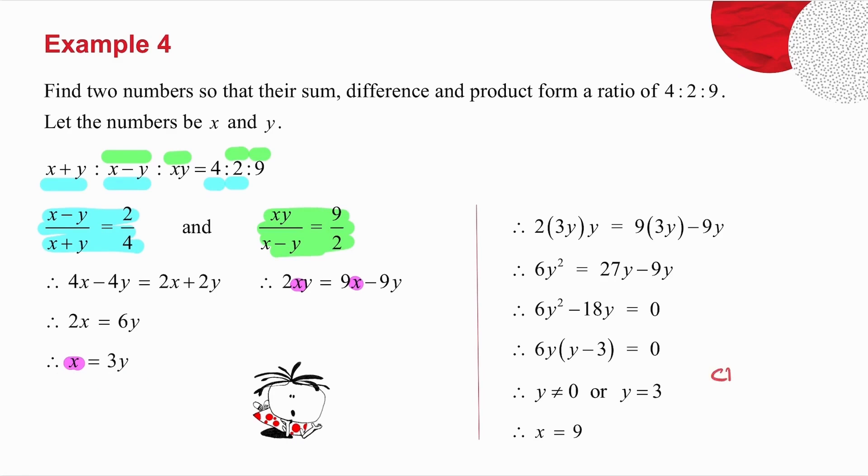With word problems, always check your answer. If x is 9 and y is 3, the sum of the two numbers is 12. The difference, 9 minus 3, is 6. The product, 9 times 3, is 27. 3 goes into all of those numbers: 3 into 12, 3 into 6, 3 into 27. And the ratio I've got is exactly what they gave me. So there's that one done.